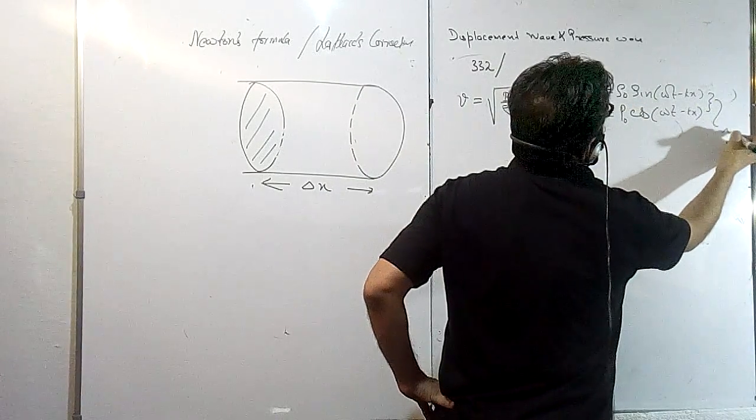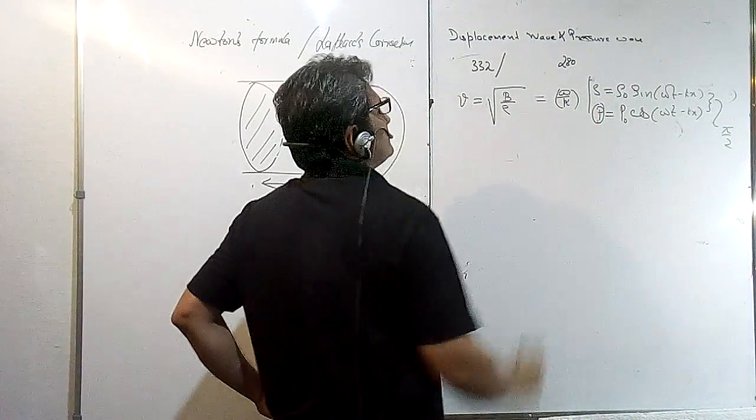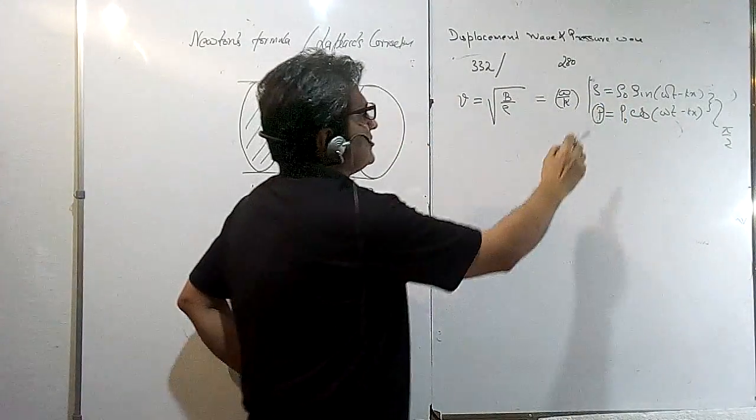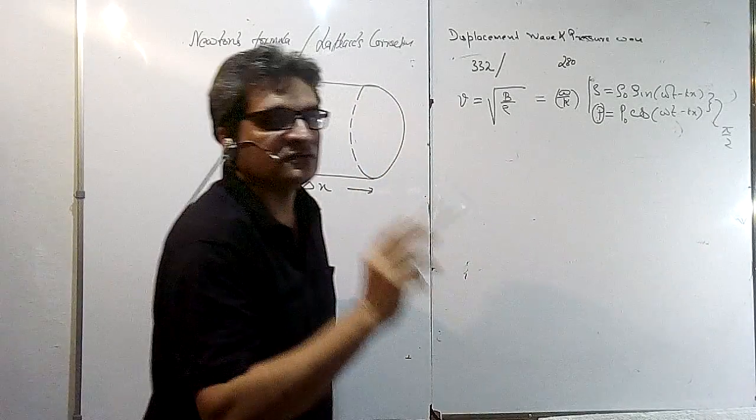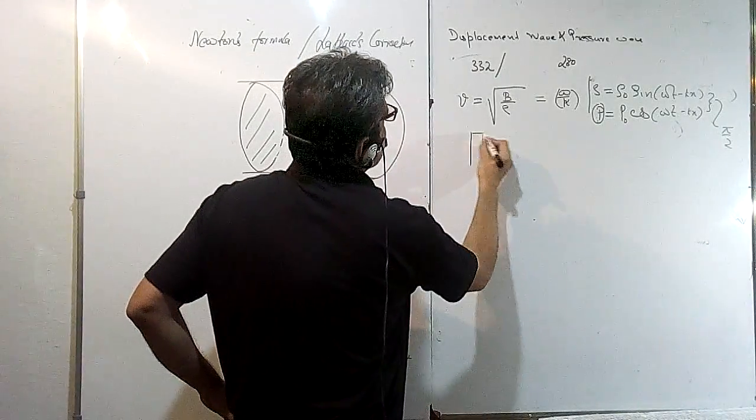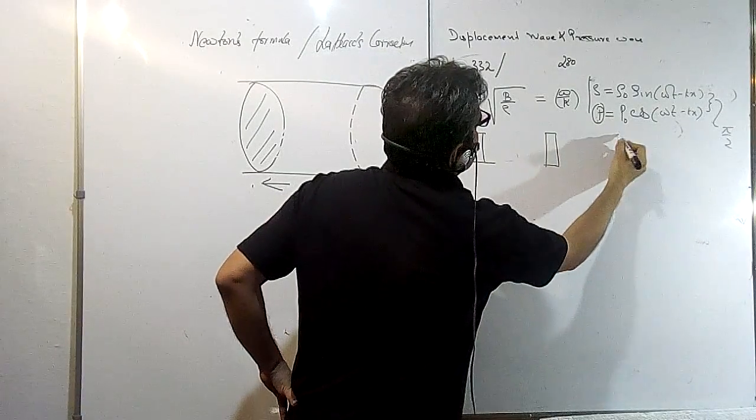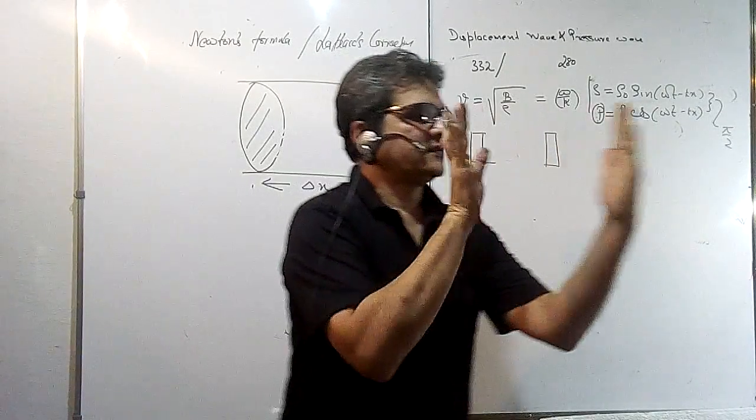It is important to note that they are out of phase by π/2, so when this is zero, this is maximum, and when this is maximum, this is zero. This is—I again repeat—pressure variation, not the pressure. The wave is traveling with compressions; these are two compressions, this is the third compression.